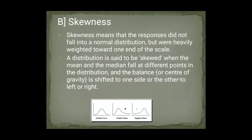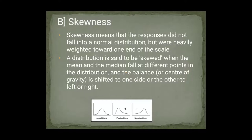The second measure is skewness. Skewness means that the responses are not falling in normal distribution. Why do they not fall in normal distribution? Because they are heavily distributed on one side — on one end of the scale it is heavily distributed. This distribution called skewness means that the mean and median are at different points — they will not be equal. And it will not be balanced. As you can see, the normal curve is balanced — the fall and rise are equal. Skewness means that when our fall is greater on the right side, it will be positive skewness. And when our fall is greater on the left side, it will be negative skewness.